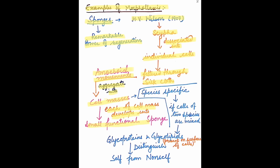Each cell mass develops into a small functional sponge. If cells of different species are mixed with each other, the cells identify cells of their own species and aggregate according to their species. This is known as species-specific aggregation. The ability to identify cells of their own species is due to the presence of glycoproteins and glycolipids on the cell surface.